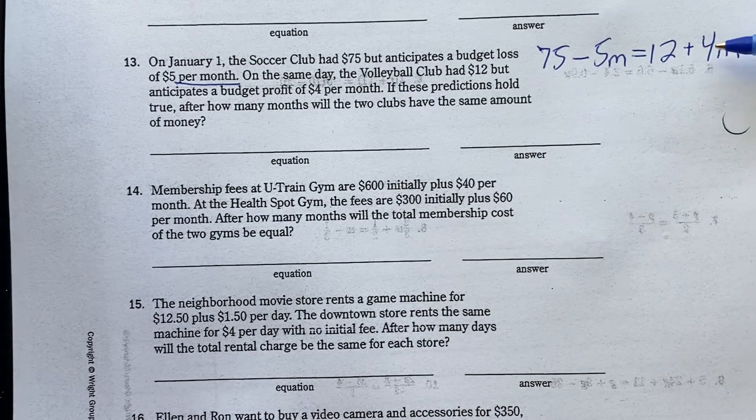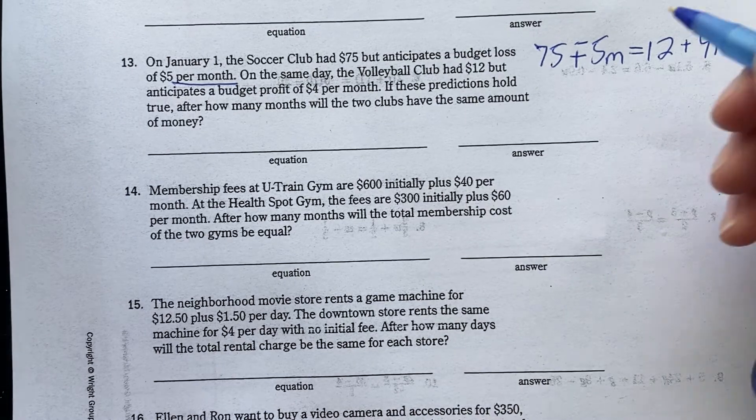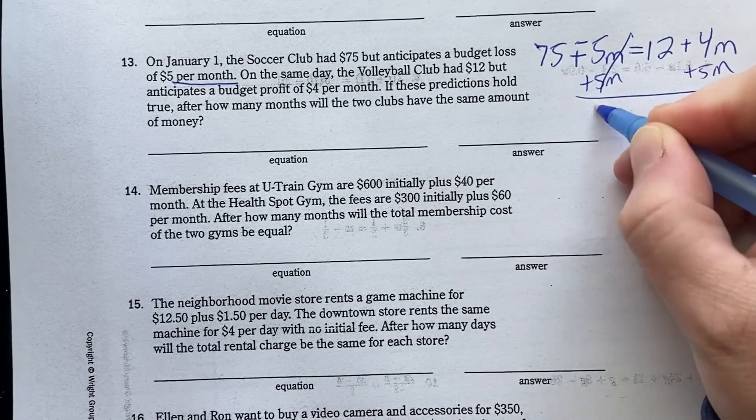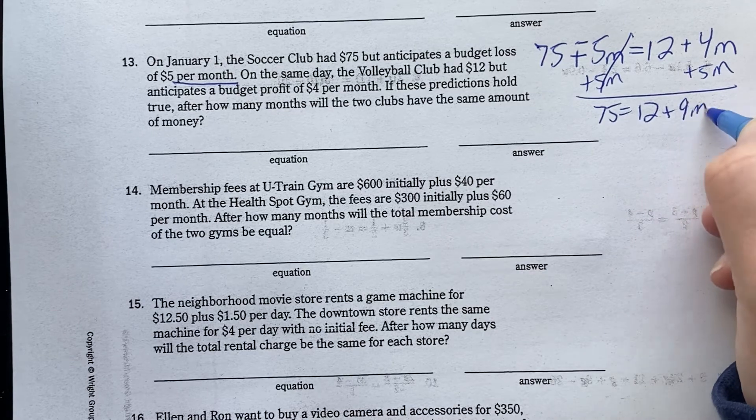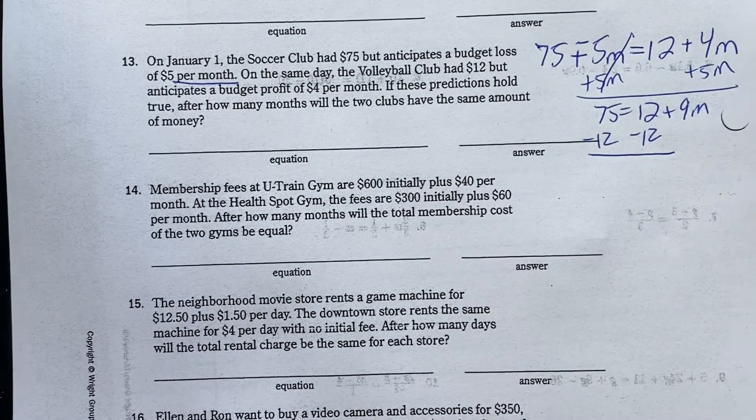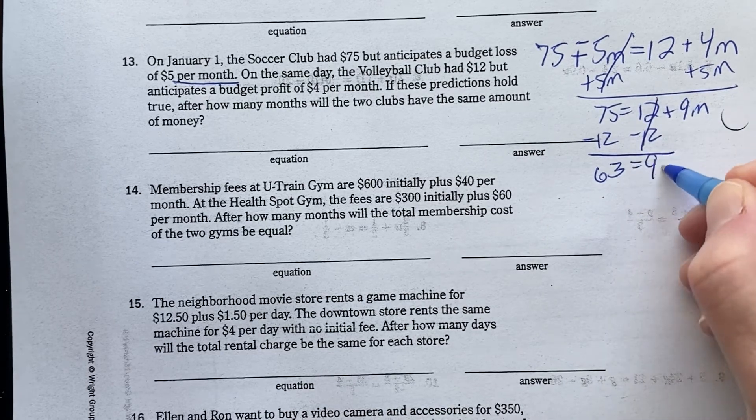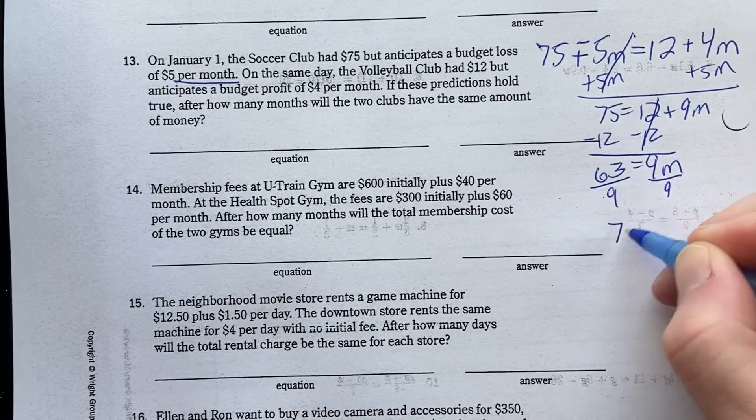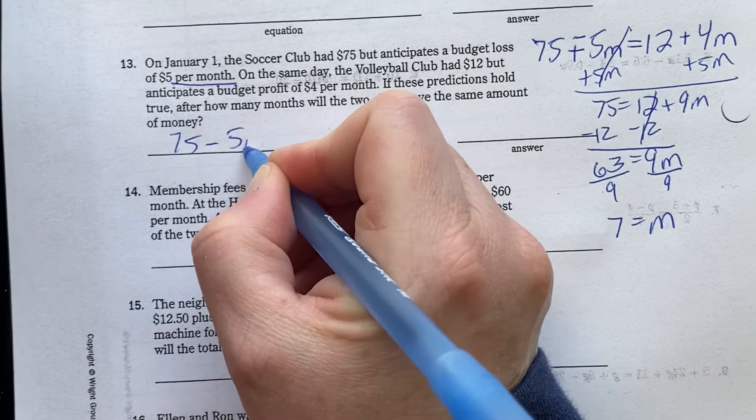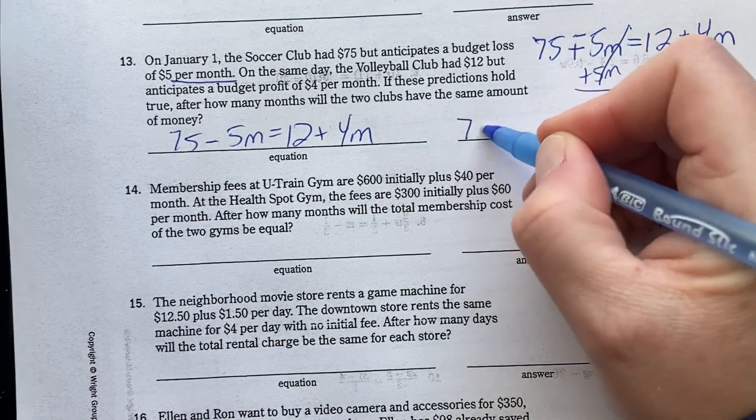AX plus B, CX plus D. So, I'm going to add the opposite here, because terms are separated by addition. I am going to add 5M and add 5M. 75 equals 12 plus 9M, subtracting 12. Why did I do that? I wanted to have positive numbers. If I did it the other way, I'd have two negatives. I'd end up with the same answer.